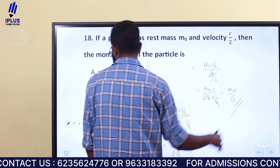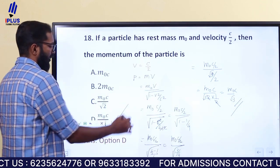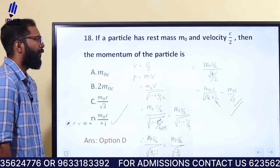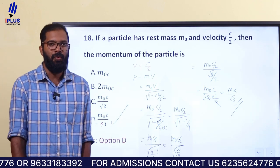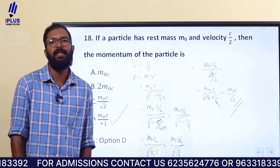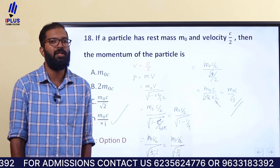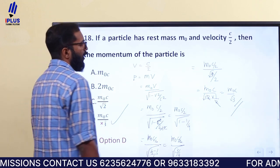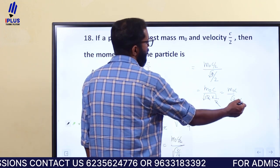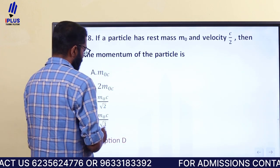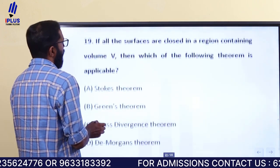M₀c divided by root 3. So the answer is M₀c divided by root 3. Option C is the right choice.